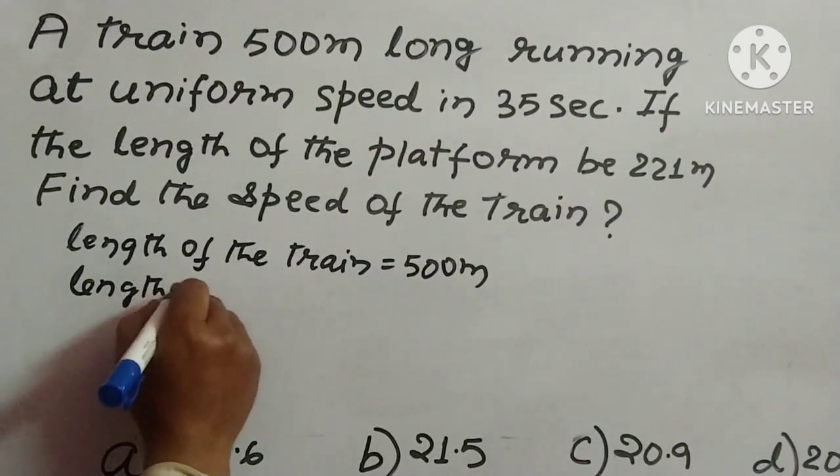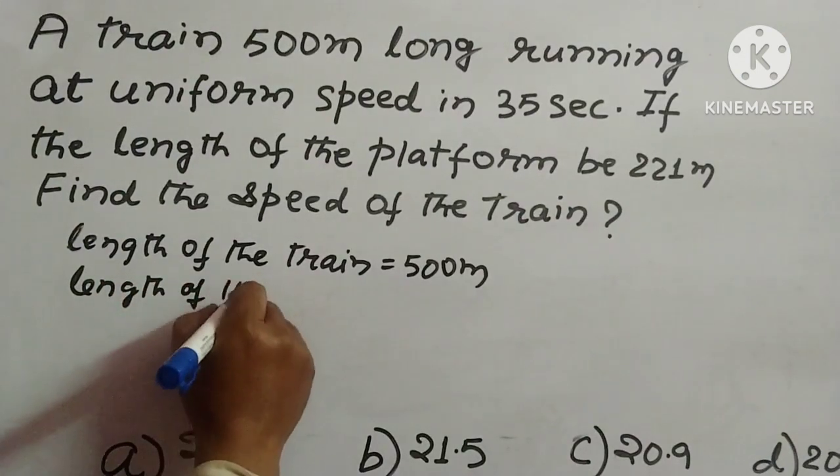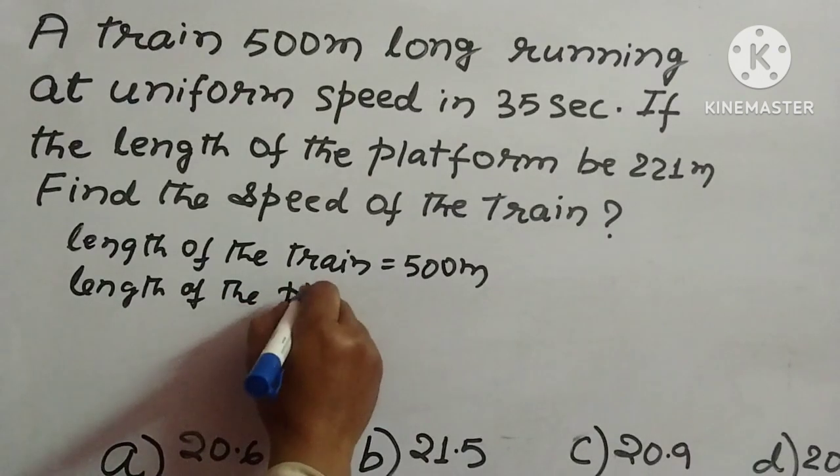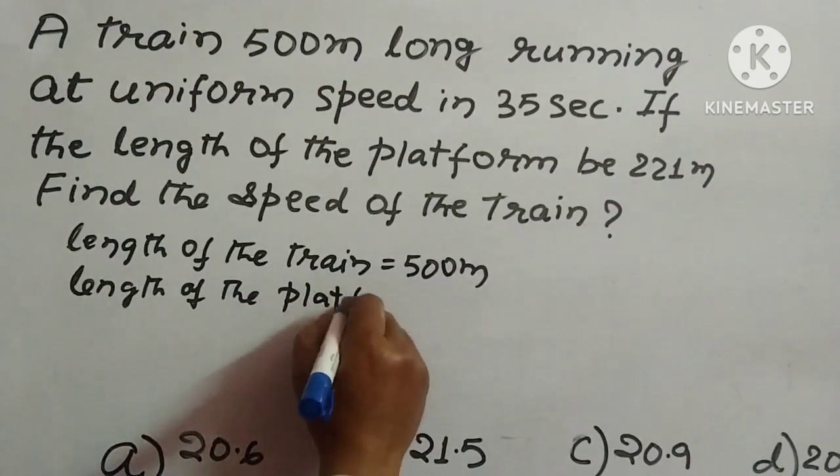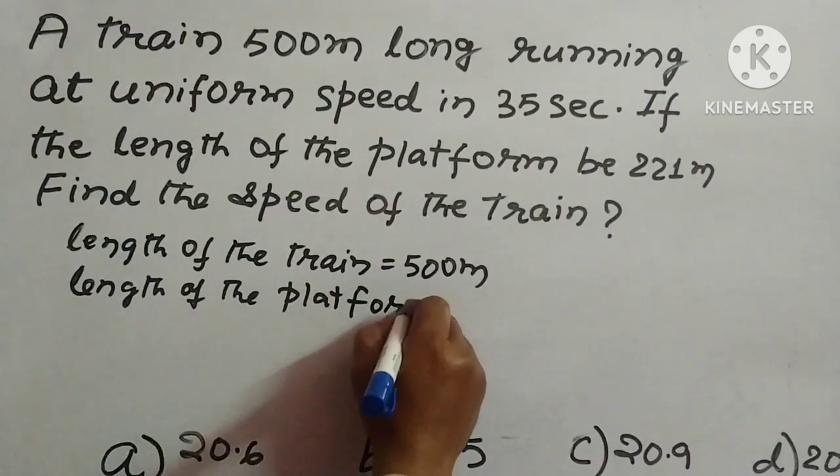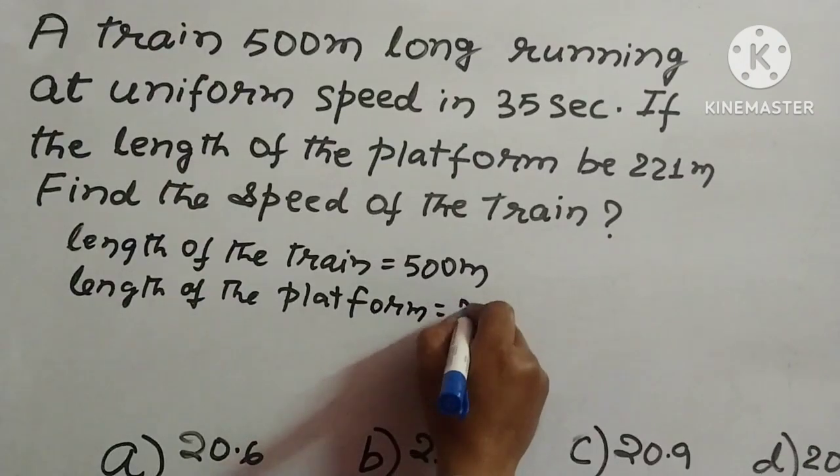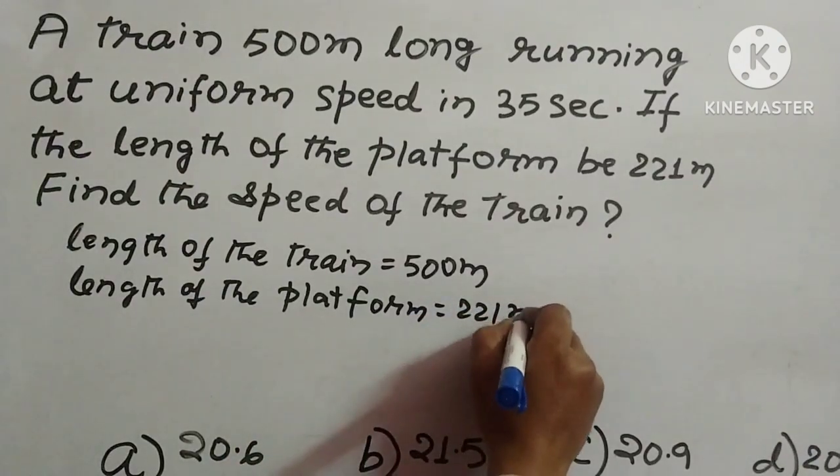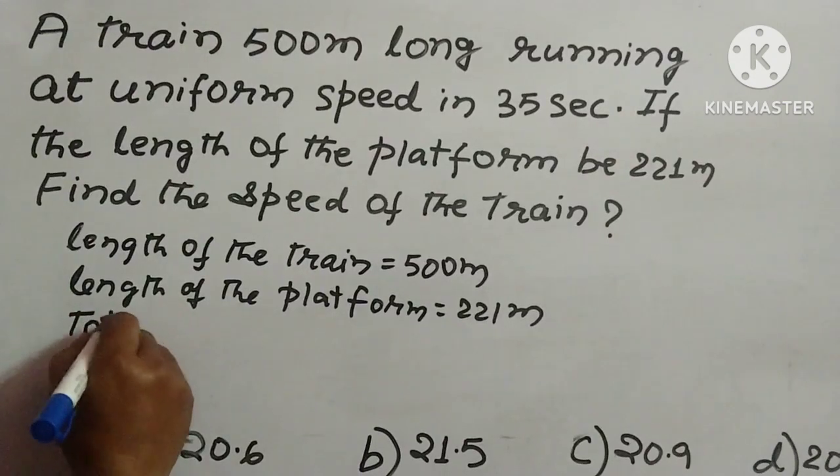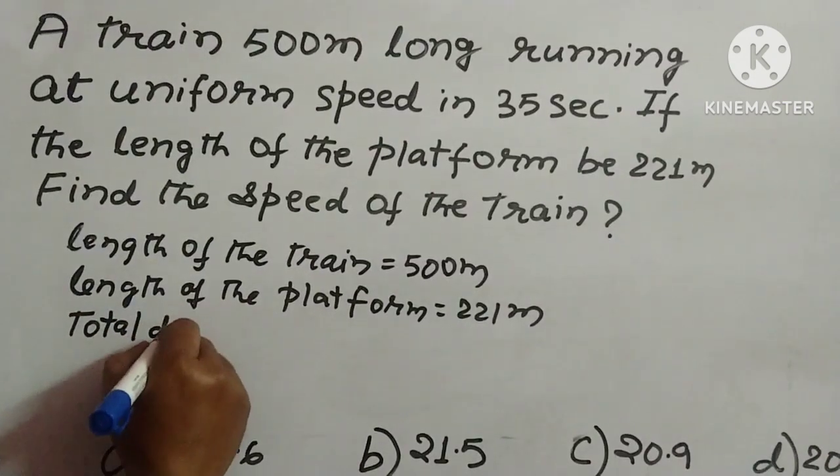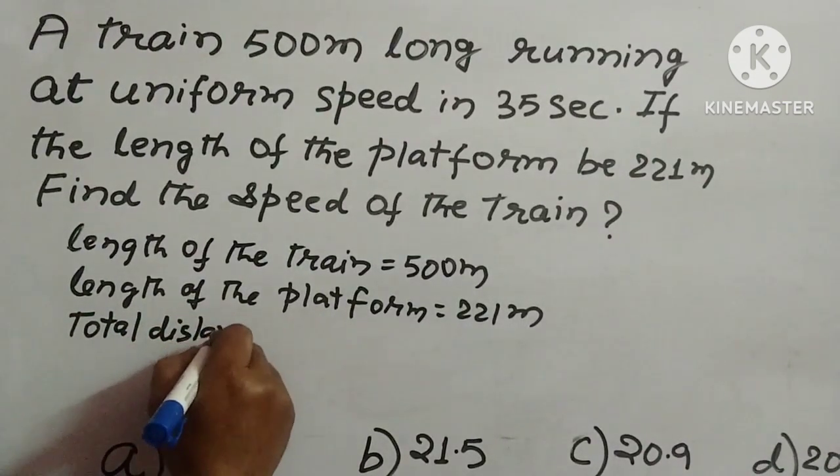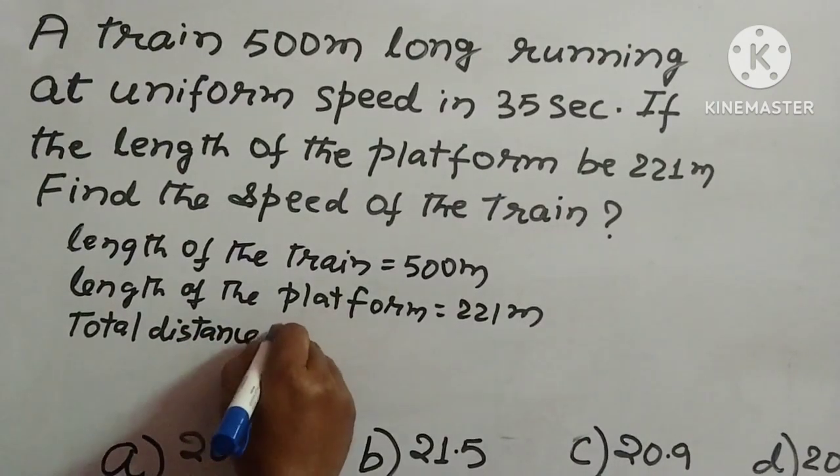Length of the platform is 221 meters. The total distance - total distance train covers...